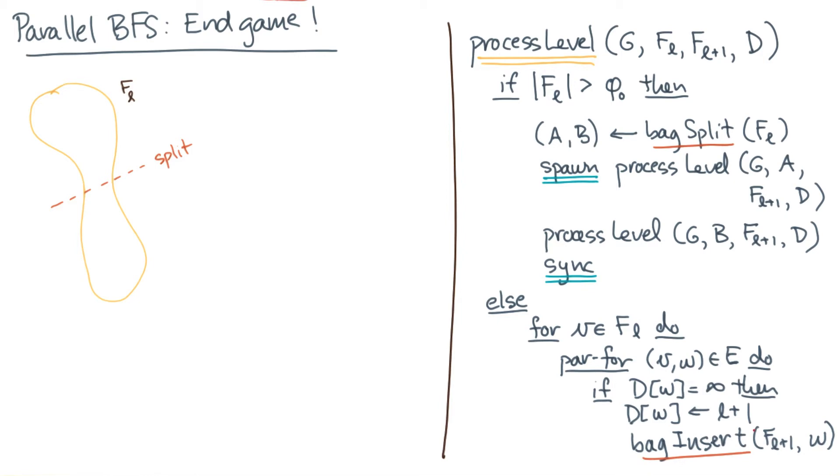Now the bag inserts are trickier. And for those, we're going to have to exploit the fact that bags are logically associative. Therefore, we can use these reducer hyperobjects that we talked about earlier.